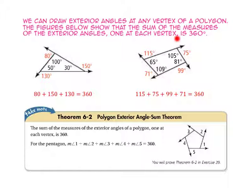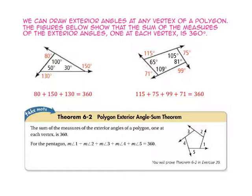Notice the same is true for the quadrilateral. Using the polygon exterior angle sum theorem, the sum of the measures of the exterior angles of a polygon, one at each vertex, is always 360 degrees — whether it is a triangle with three sides, a dodecagon with 12 sides, or a 100-gon with 100 sides.